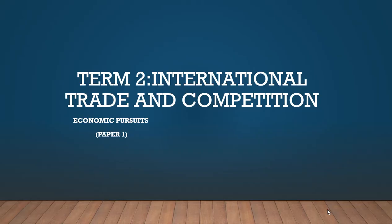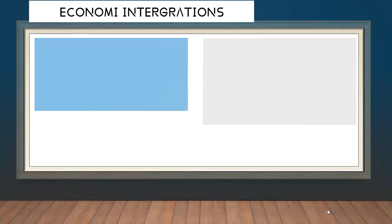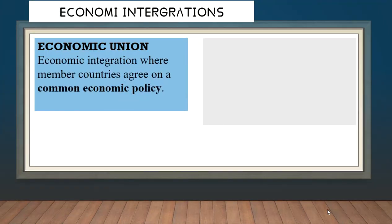Welcome to Trade and Competition. Let's start with economic integrations. The economic union is an economic integration where member countries agree on a common economic policy. An example of an economic union would be BRICS — which stands for Brazil, Russia, India, China, and South Africa — where these countries have a common economic policy.